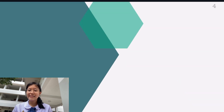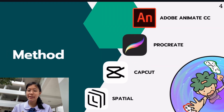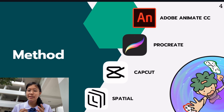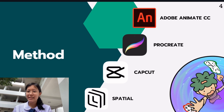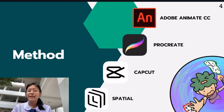Next is the program that we use for our method. We use Adobe Animate CC for our overall project, to create the CAI and the test. We use Procreate for drawing, CapCut to edit video, and a special tool to create the metaverse.